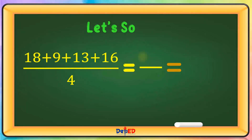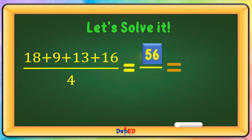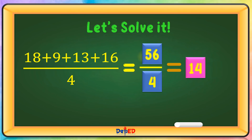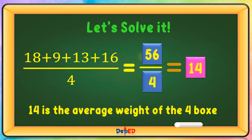Let's solve it. 18 plus 9 plus 13 plus 16 equals 56. 56 divided by 4 equals 14. 14 is the average weight of the four boxes.